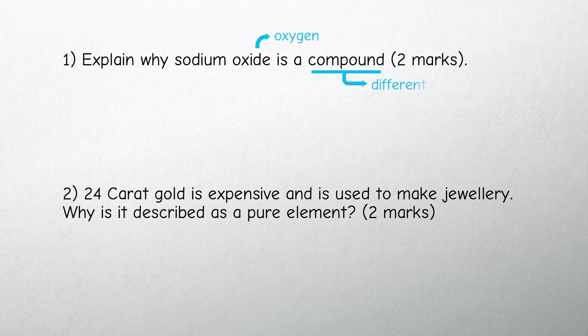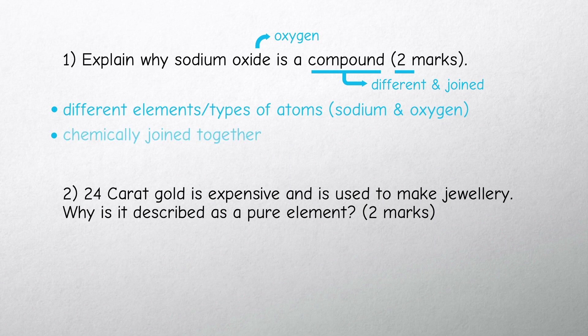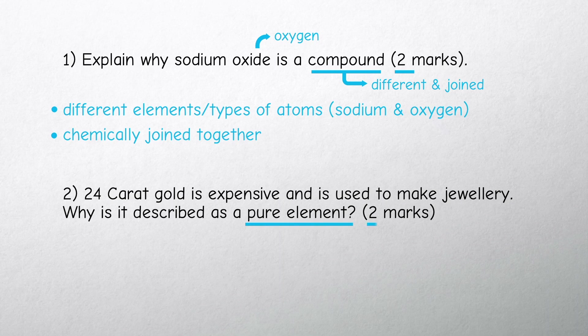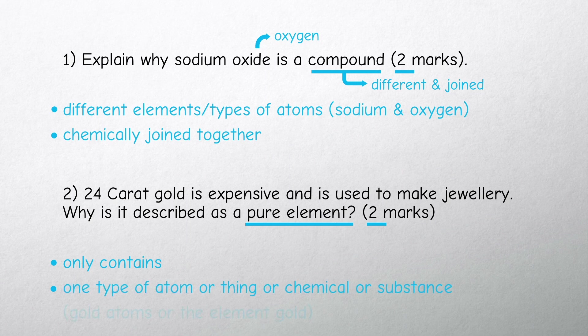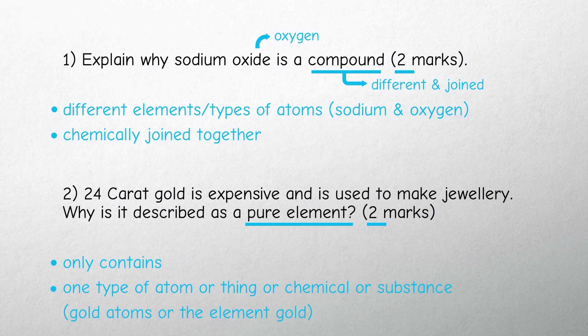Sodium oxide is a compound because it's made of different elements, sodium and oxygen, that are chemically joined or bonded together. 24 karat gold is a pure element because it only contains one type of atom - gold atoms.